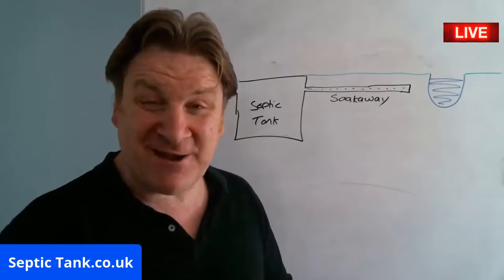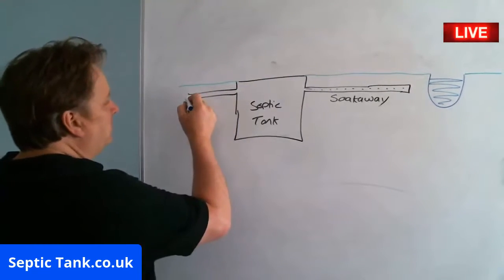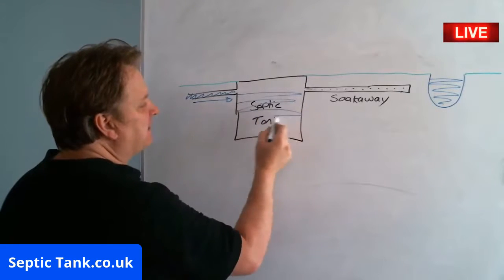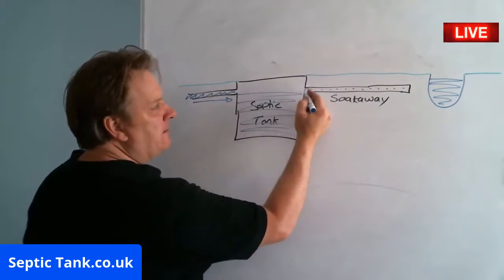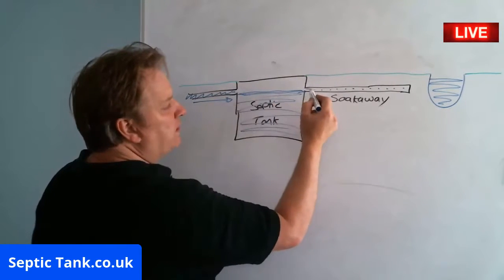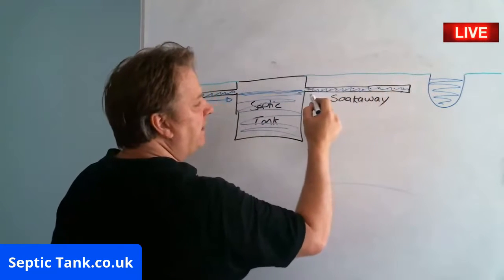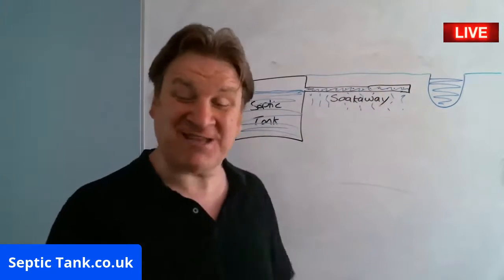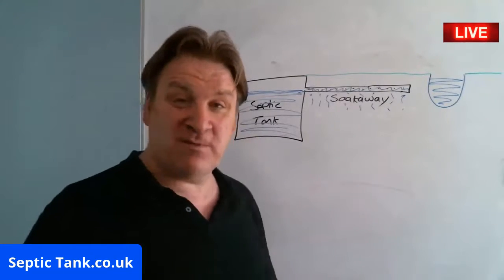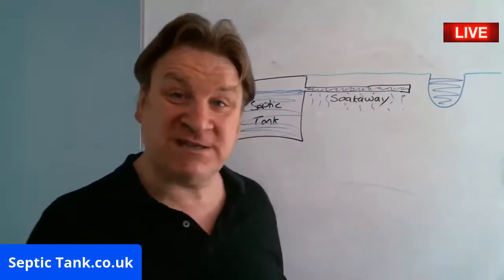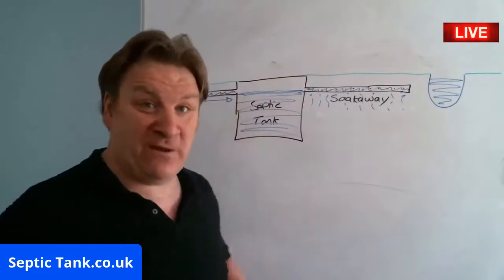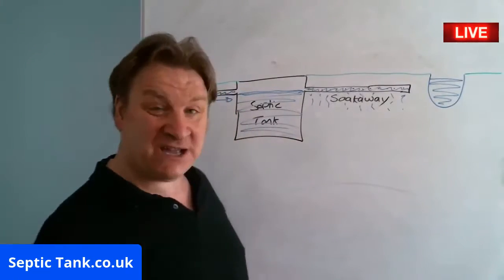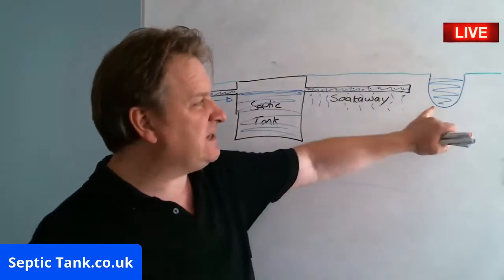Let me quickly explain how a septic tank works. Raw sewage in the form of wastewater goes into the septic tank, fills it up, and when it reaches a certain level, the wastewater then goes into the soak away and drains into the soil. The soak away is probably the most important component — if the water didn't soak away, the tank would overflow, stink, and back up to the house.